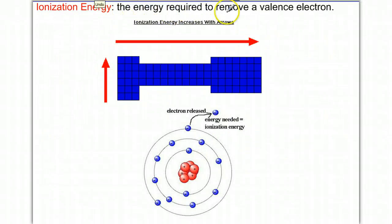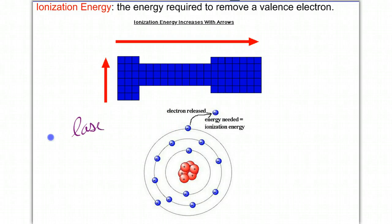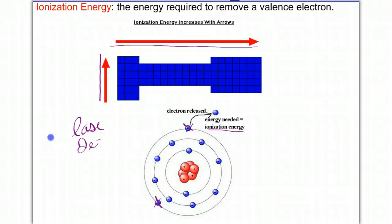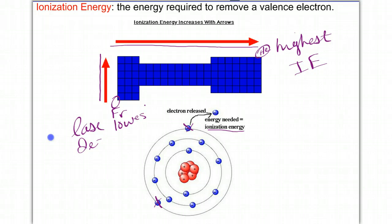Ionization energy is the energy required to remove a valence electron. This element has two valence electrons, and typically it's going to want to lose those two valence electrons. The energy needed to remove those electrons is called the ionization energy. For some elements, it takes more energy to remove their electron than for others. The pattern is: as you go up the periodic table and to the right, ionization energy increases — meaning helium has the highest ionization energy and francium has the lowest.